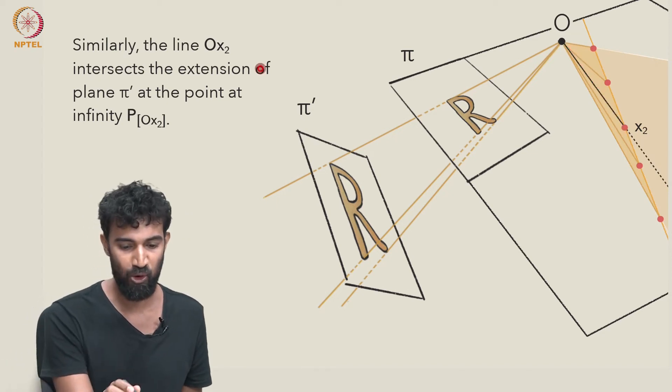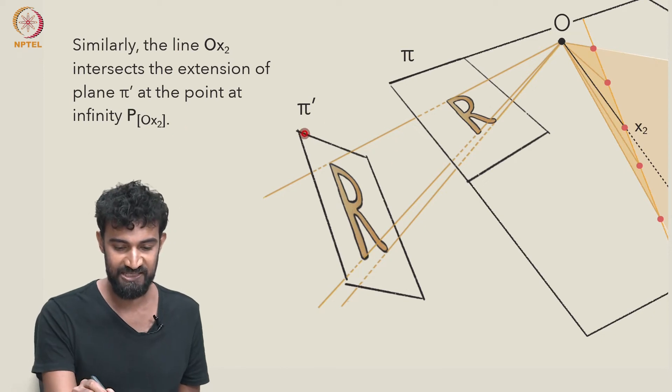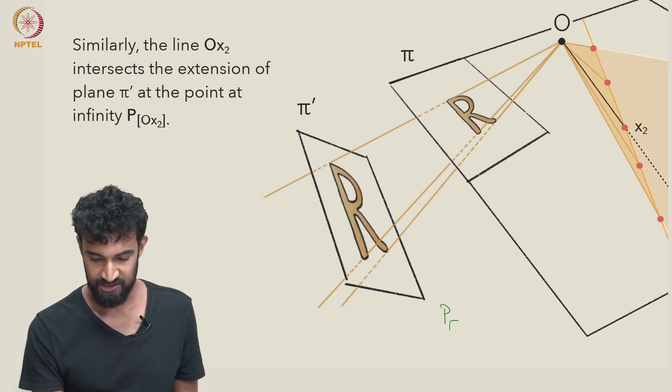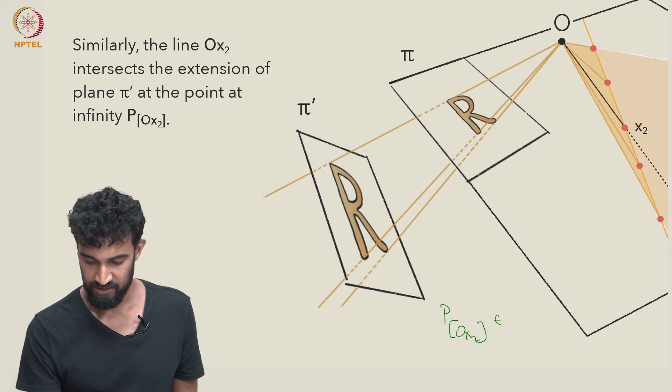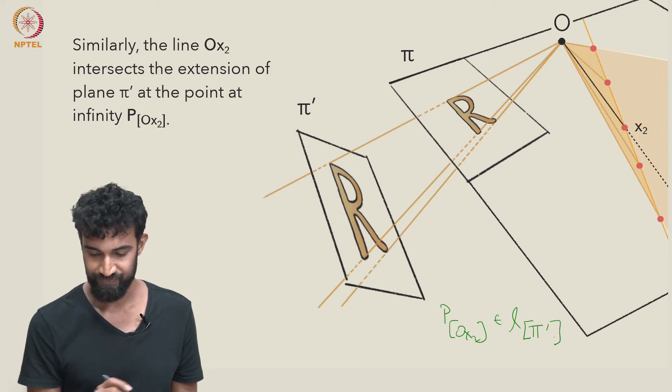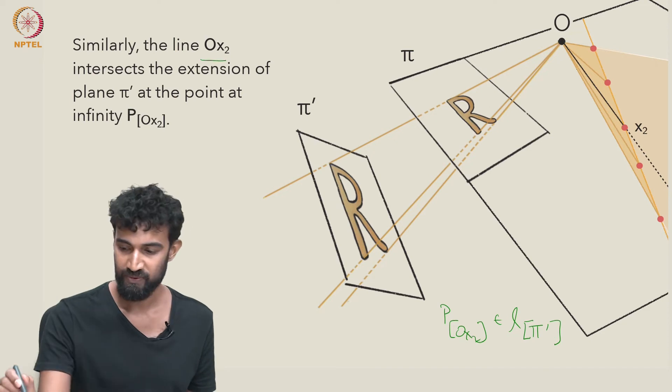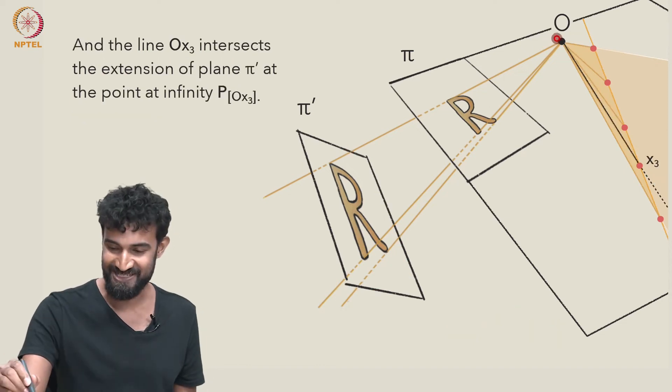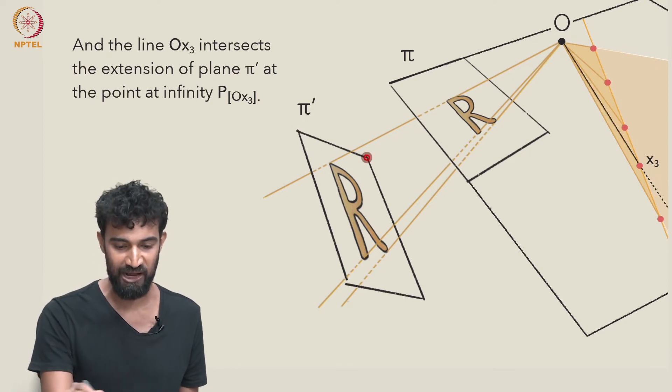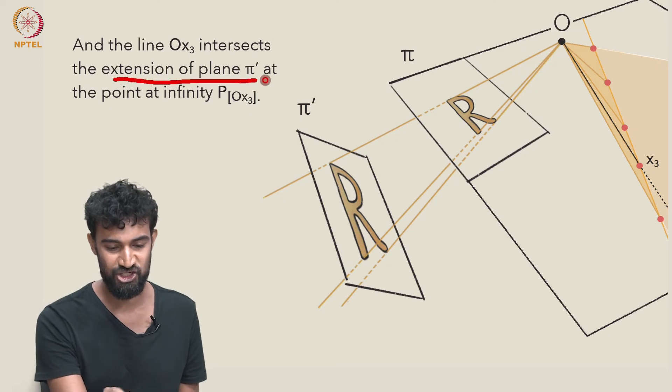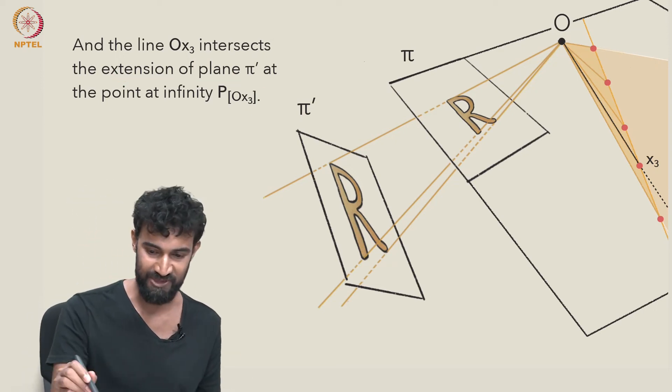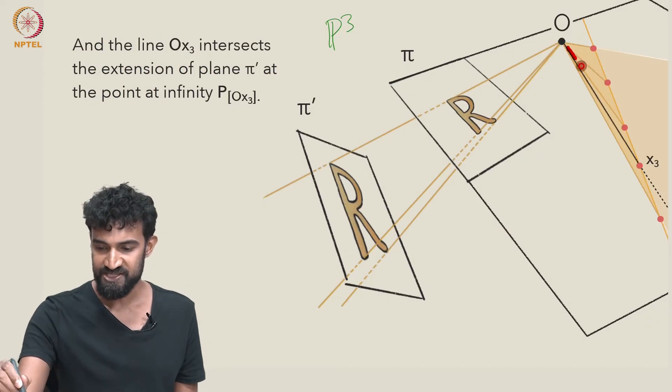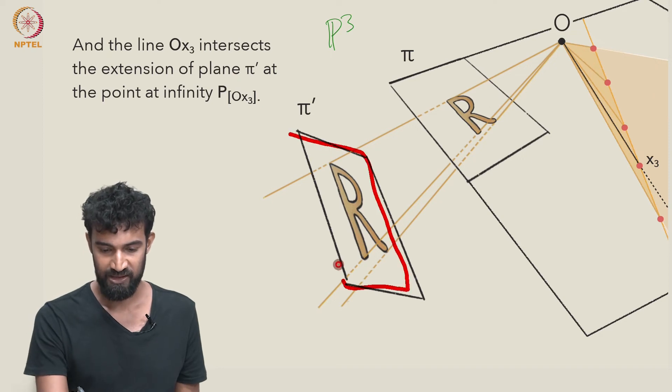Similarly, Ox2 will meet a point at infinity, P[Ox2]. And that will also be contained in the extension of the plane π', simply because it will be contained in the line at infinity associated to π', simply because the line Ox2 is parallel to π'. And finally, we get the same thing with Ox3. Again, Ox3 is parallel to π', so its point at infinity will also be contained in the extension of the plane π' in P3. We're working in P3, which is why all of this now holds.